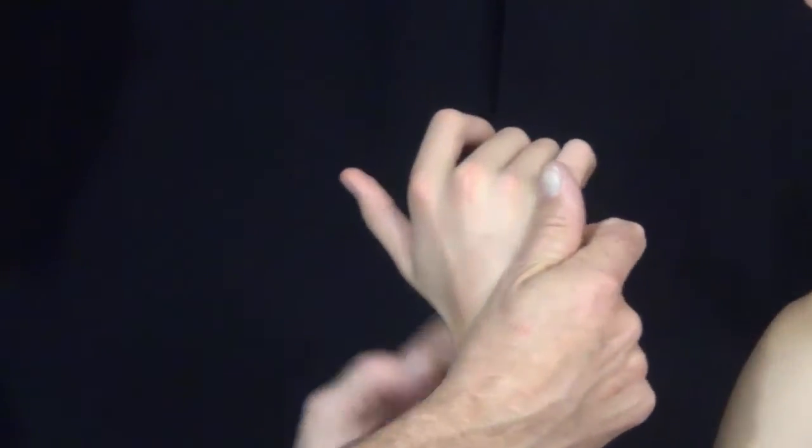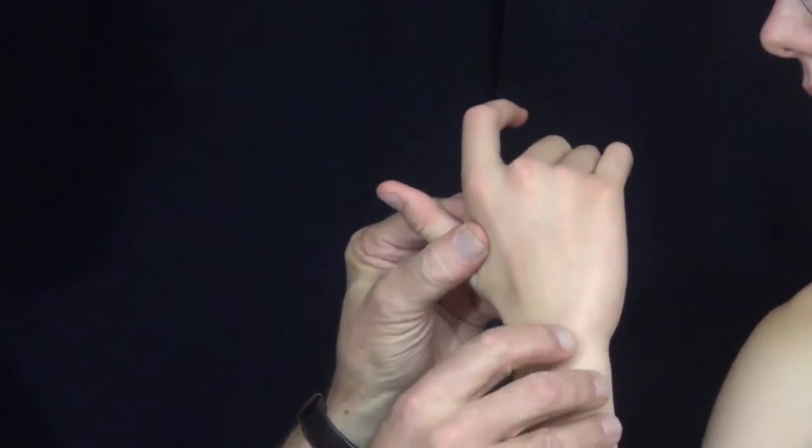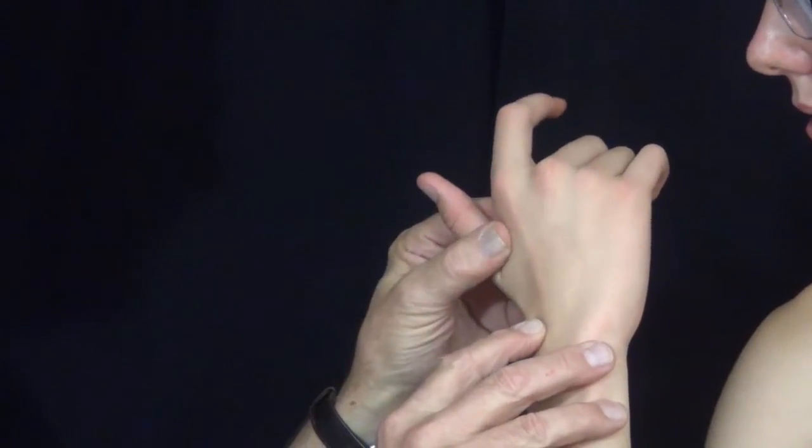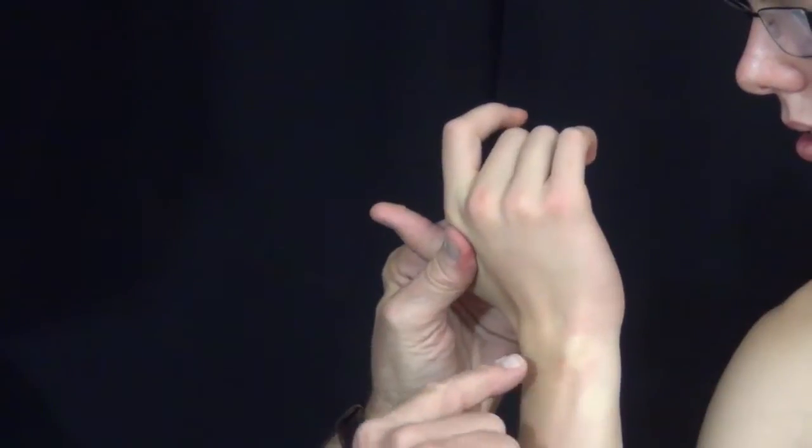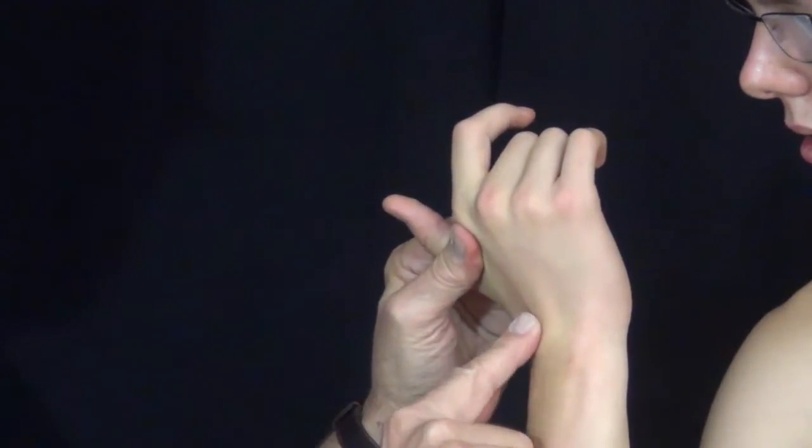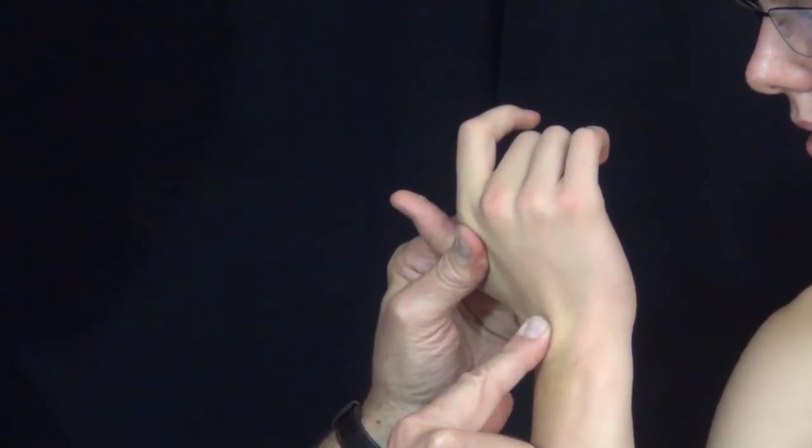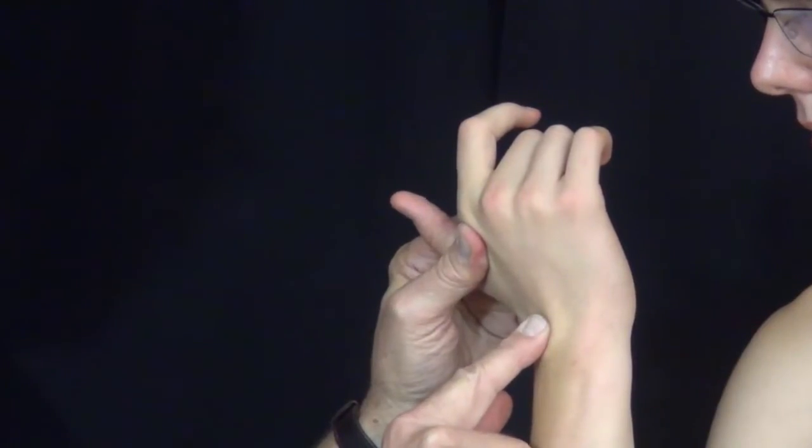The second compartment comes across, and you can palpate it by having the patient extend the wrist and hold it there. There's two tendons that insert right at the base of the metacarpals: the extensor carpi radialis longus and brevis.